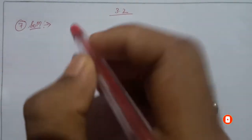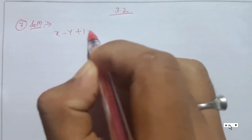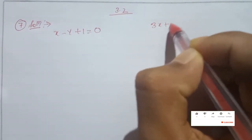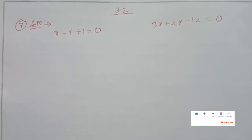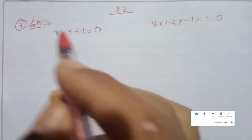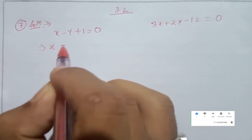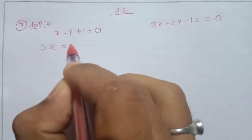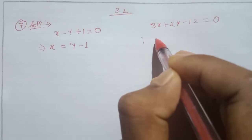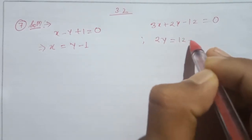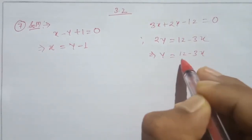Let's find how x minus y plus 12 equals 0. From the second equation, two x is two minus twelve x, which implies that y is equal to two minus three x, divided by two.